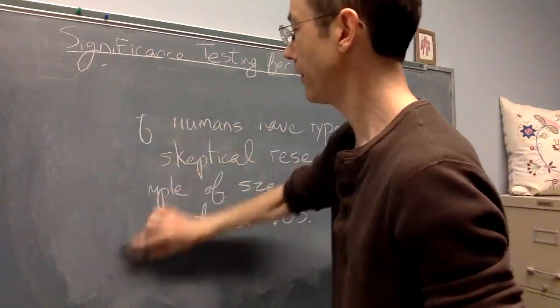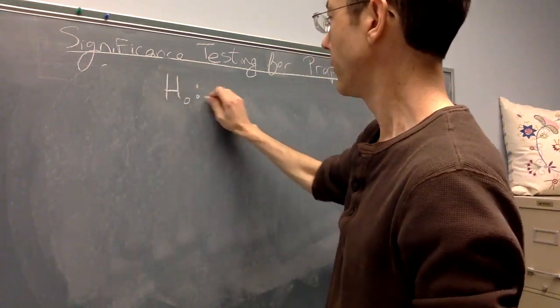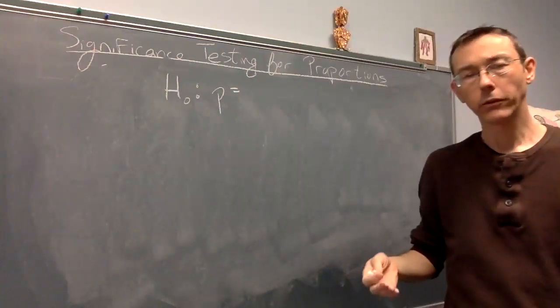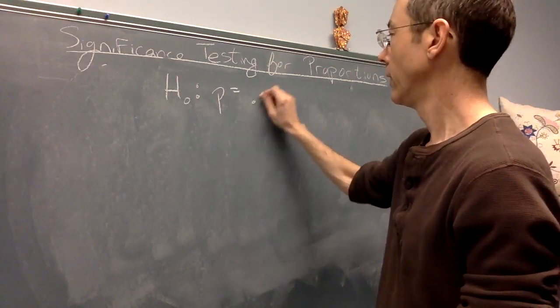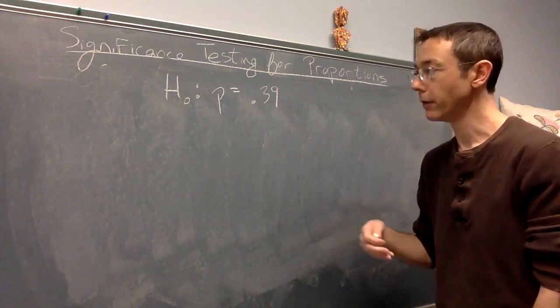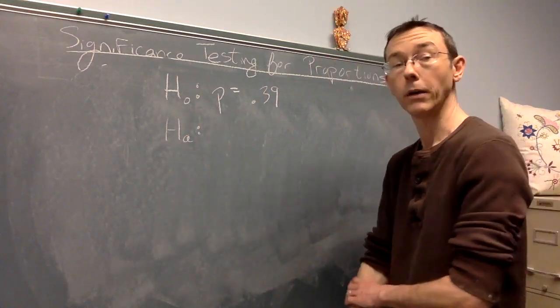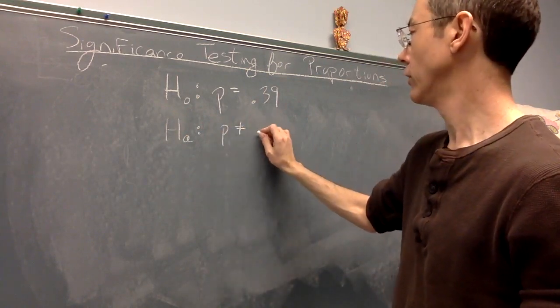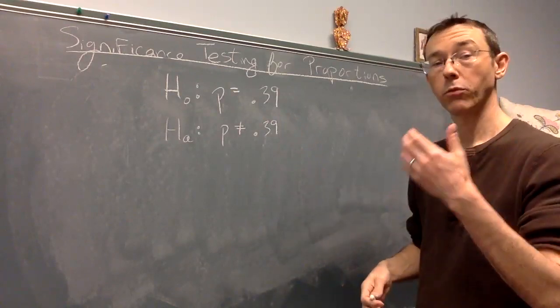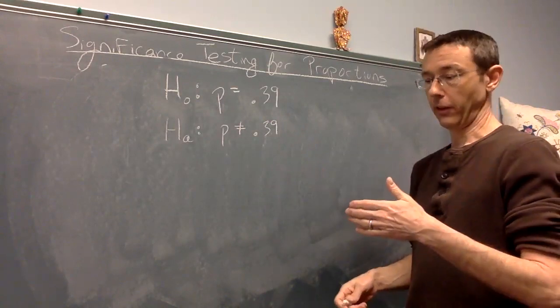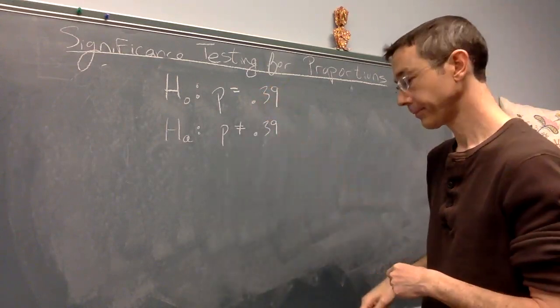Let's start by writing down null and alternative hypotheses appropriate to this question. So as always, the null hypothesis should be that our sample is just due to random chance, that in fact the claim of the internet, sort of the default claim, is true. In this case, that p is 0.39, that 39% of humans have type O positive blood. The alternative hypothesis is the thing we're actually interested in, the thing that we are thinking might be true. In this case, that the population proportion is not 39%. Notice that both hypotheses here are written in terms of parameters. These are making statements about the entire population, not about the sample. Our sample proportion, p hat, is going to be the thing that allows us to distinguish which one of these is more plausible.